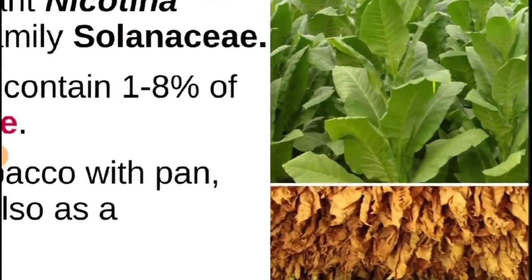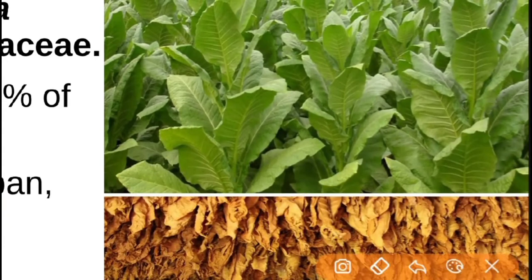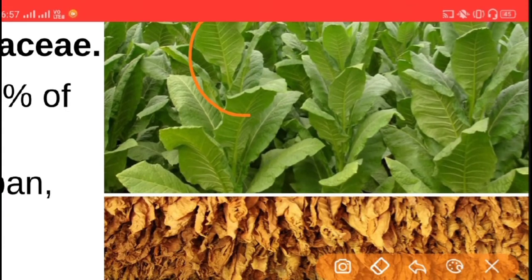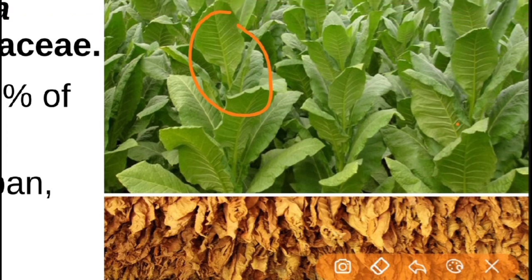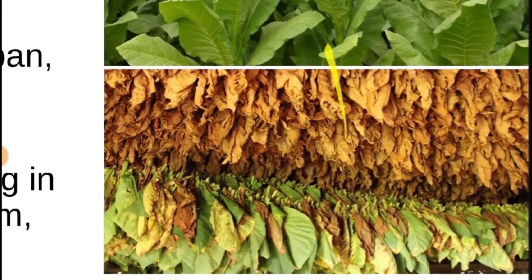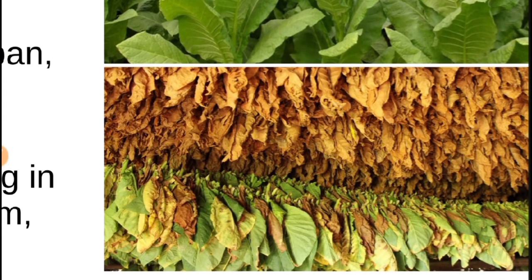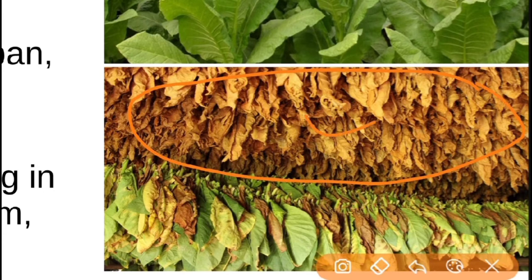Here you can see the tobacco plantation and tobacco leaves. After these leaves become mature and full-grown, they are picked, dried — you can see the dried leaves which are ready for tobacco production.